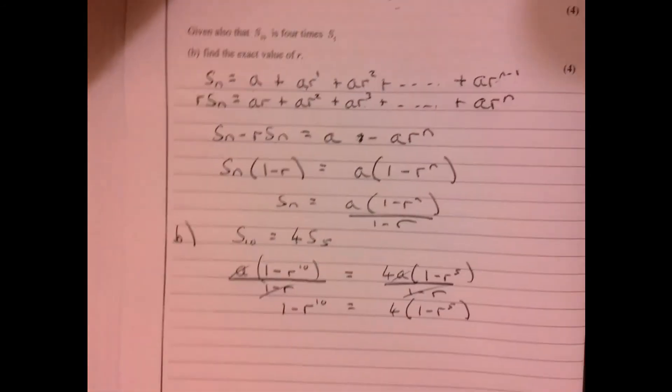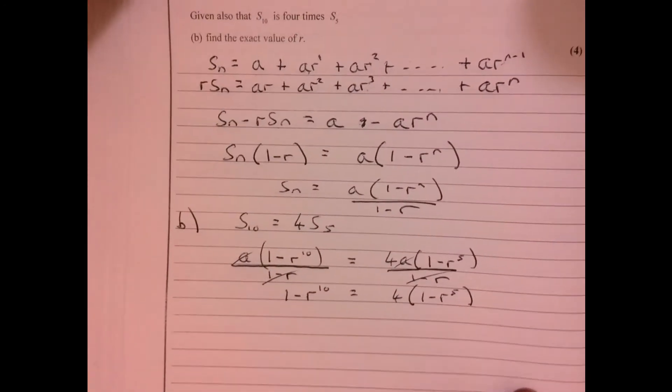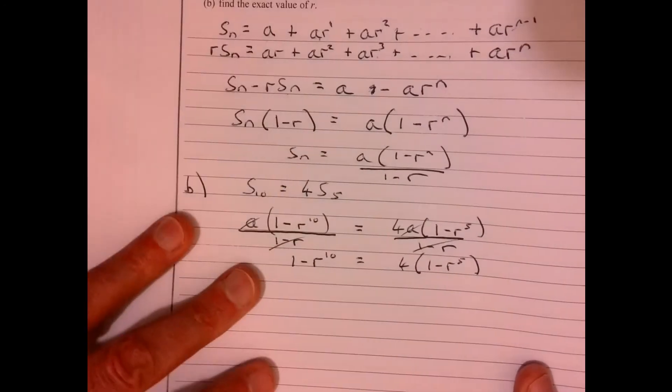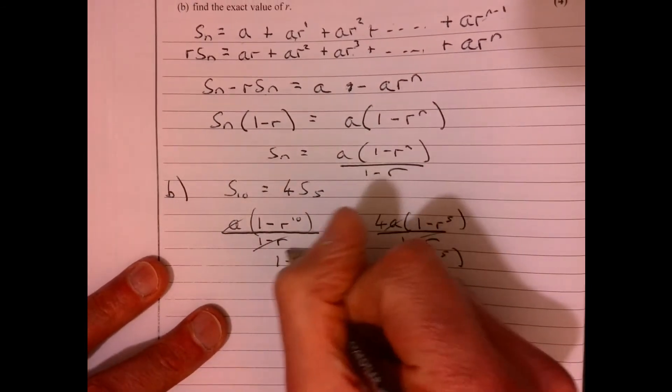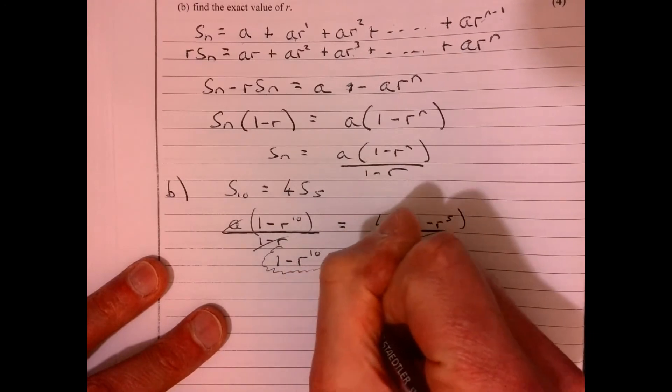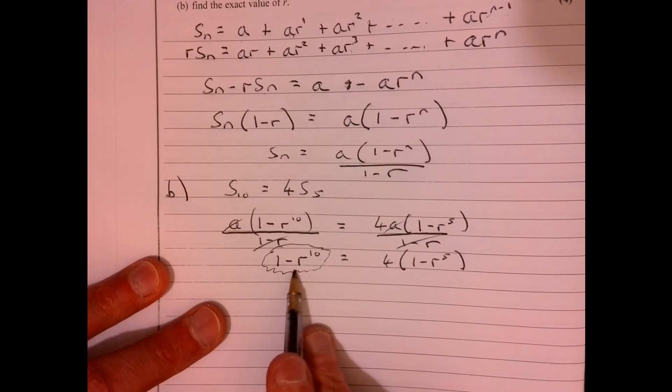Now, should be able to get to that stage. Now, the next bit is probably the trickiest bit of the question, but it's really obvious when you look at it, in terms of how to make progress with this. Remember in maths, it's quite often, can we write something a different way? This is just difference of two squares.